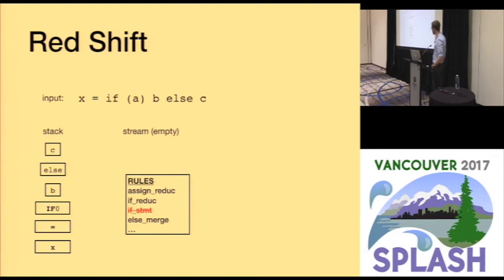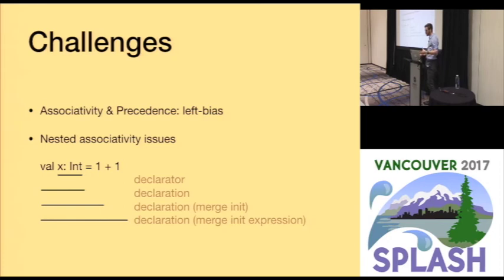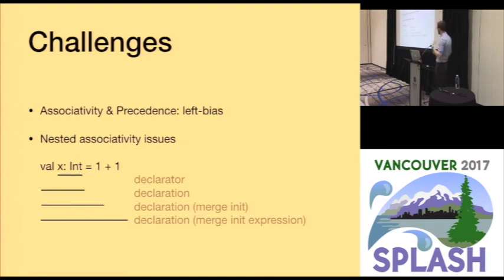Now for some challenges with this approach. It doesn't handle associativity and precedence well — because we always reduce rather than shift, it's very left-biased and you always get left associativity. For expressions this isn't a huge problem because you're writing custom code: you can have a reduction rule that builds your expression tree and merges expressions at the correct position. In my prototype I had a table with all the precedence and associativity, and one reduction rule that merged the expression tree.